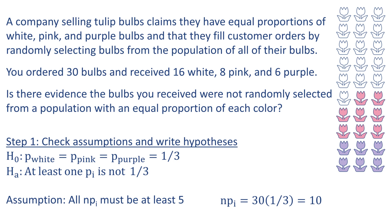The next step in the five-step hypothesis testing procedure is to compute the test statistic. I'll take you to Minitab Express now to do that. Before we go there, we'll need to remember that we're testing for equal proportions and that our sample counts are 16, 8, and 6.